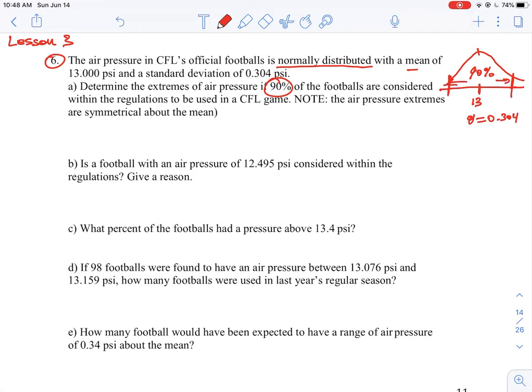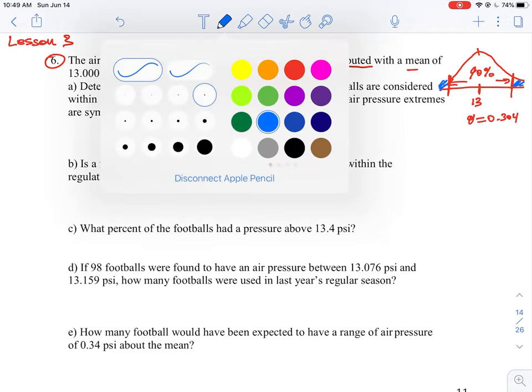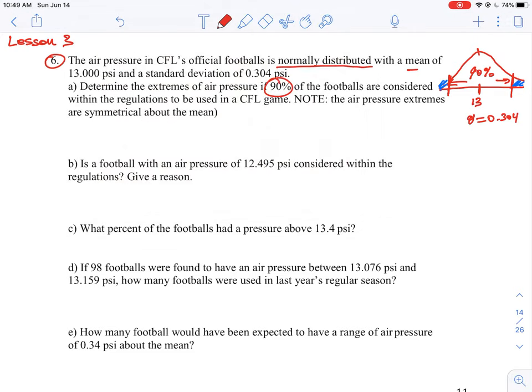So if the curve is 100%, it means that we're missing the first 5% on the edge here, and then we're missing the last 5% in the curve on the other side. So that is what 90% of the footballs are to be considered.